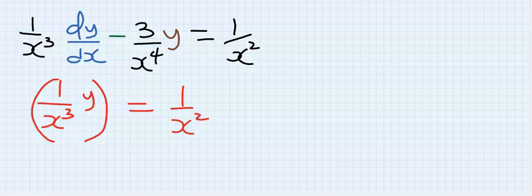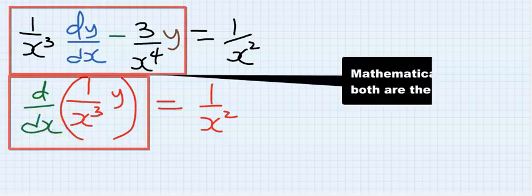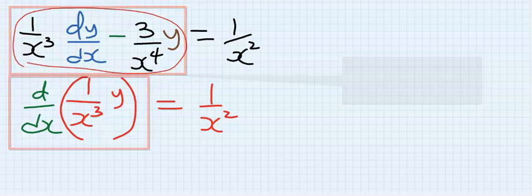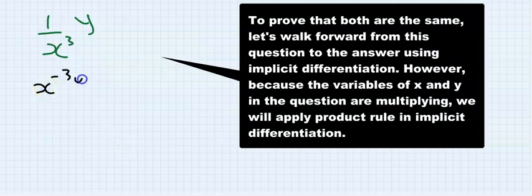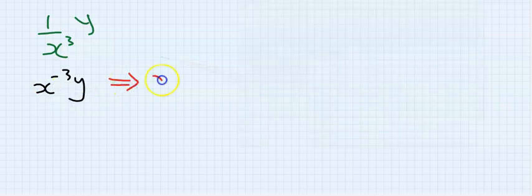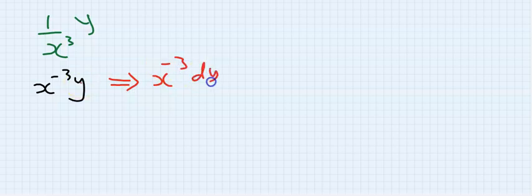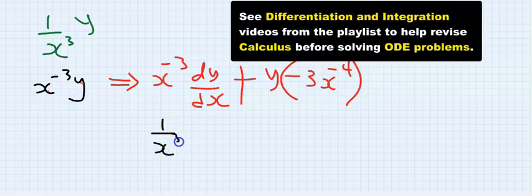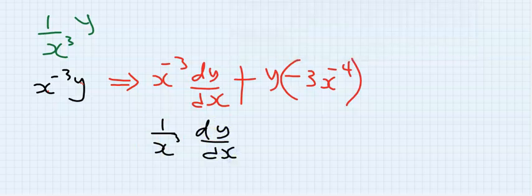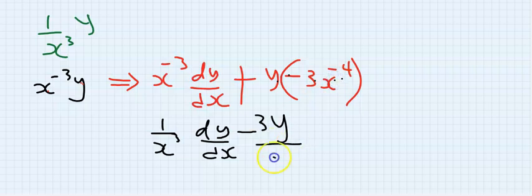Let's prove it. I will take just only this and solve it. Let's try to differentiate this. I can rewrite this as this. Now let's apply product rule. I will keep this constant, I will differentiate y, is dy/dx, plus I will now keep y constant, I will now differentiate, I will have minus 3x to the power of minus 4. If you now solve this, you're going to have that 1 over x to the power of 3 dy/dx. This will become a minus, this becomes y, and this is 3, and this becomes x to the power of 4. If you look at this very well, that is just exactly what we have here. So that means this is the same thing as this.